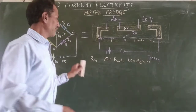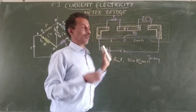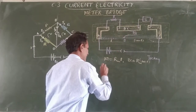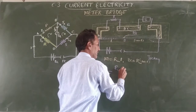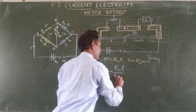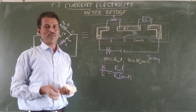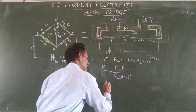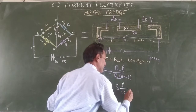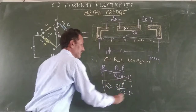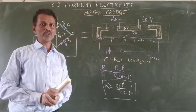So R, S, AD, and DC act as four arms of a balanced Wheatstone bridge. The balancing condition is that the ratio of resistances in adjacent arms are equal: R/S = (R_cm × L) / (R_cm × (100 − L)). The R_cm cancels, therefore the unknown resistance R = S × L / (100 − L). Using this relation we determine the value of unknown resistance R.